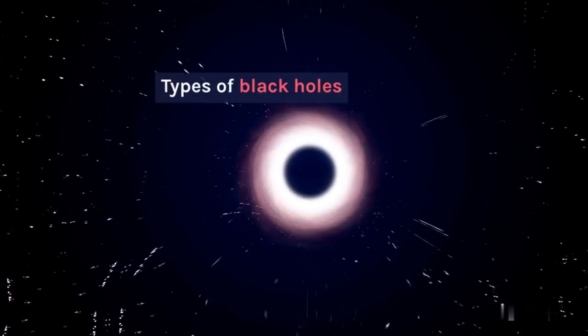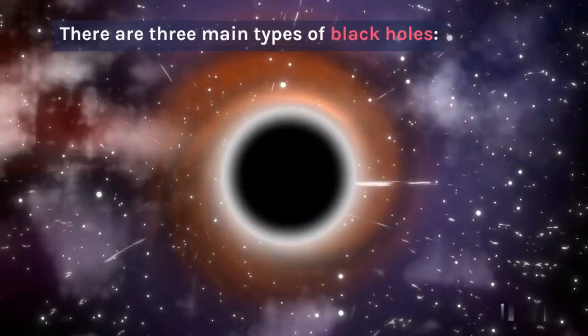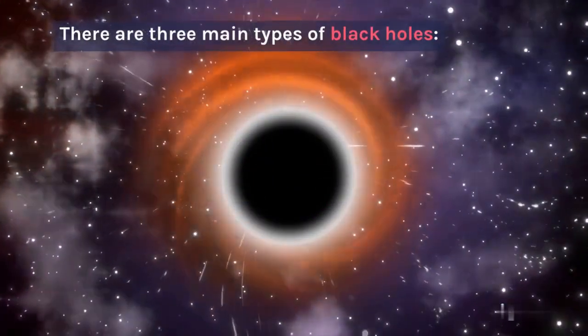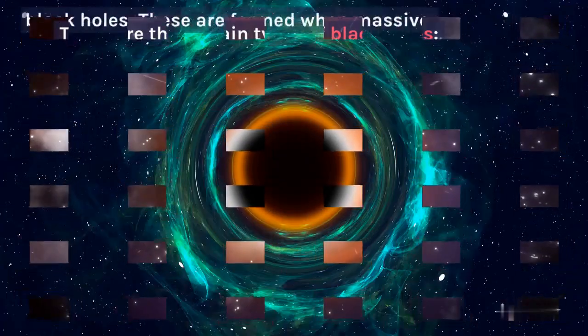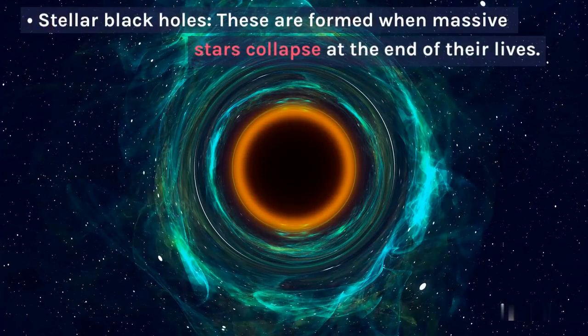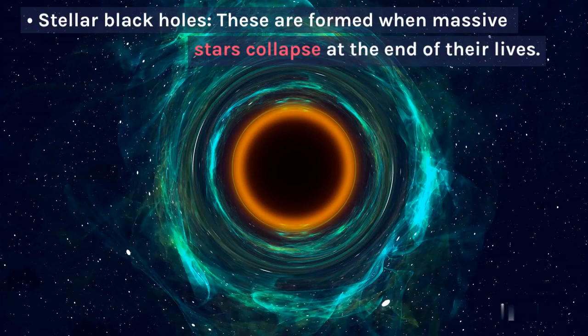Types of black holes. There are three main types of black holes. Stellar black holes are formed when massive stars collapse at the end of their lives.